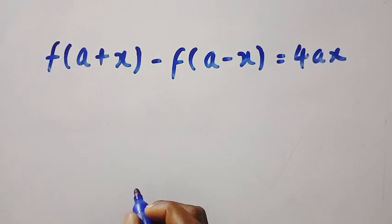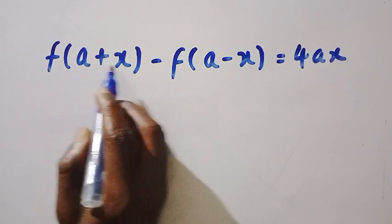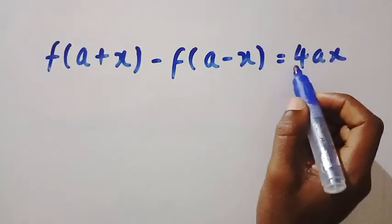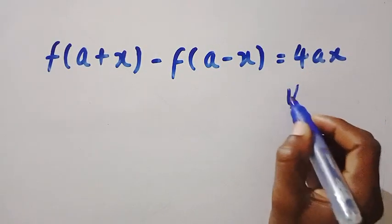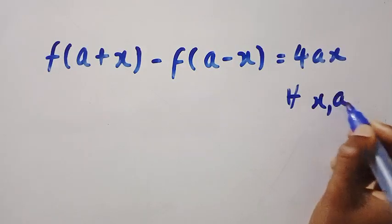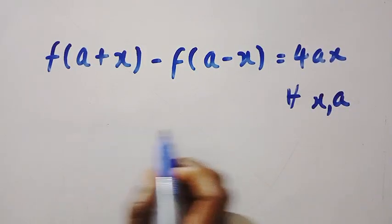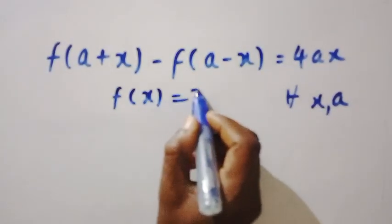Good day viewers, you are welcome. How do you solve this functional equation: f of a plus x minus f of a minus x equals 4ax, for all x and a, both members of the real numbers? We are trying to find what f of x will be.